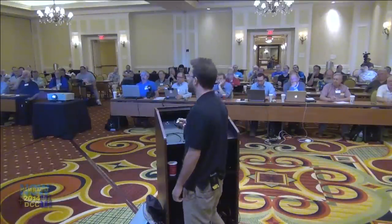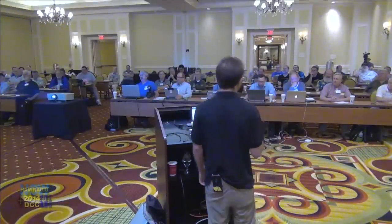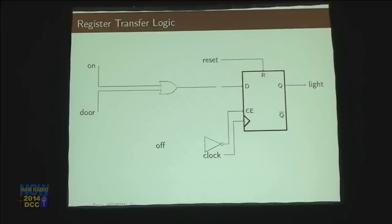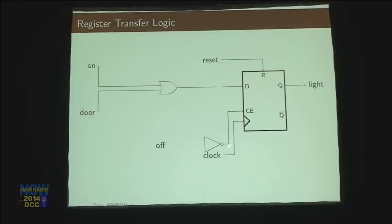To put that car door concept into this: if the off switch is on — so off is one — then this is a NOT gate. If that off is on, then this net will be off, and so the light will be off because this chip enable will be off, turning off the D flip-flop. Otherwise, if the off switch is not in position, this will be a zero, so this net will be a one, and the flip-flop is turned on.